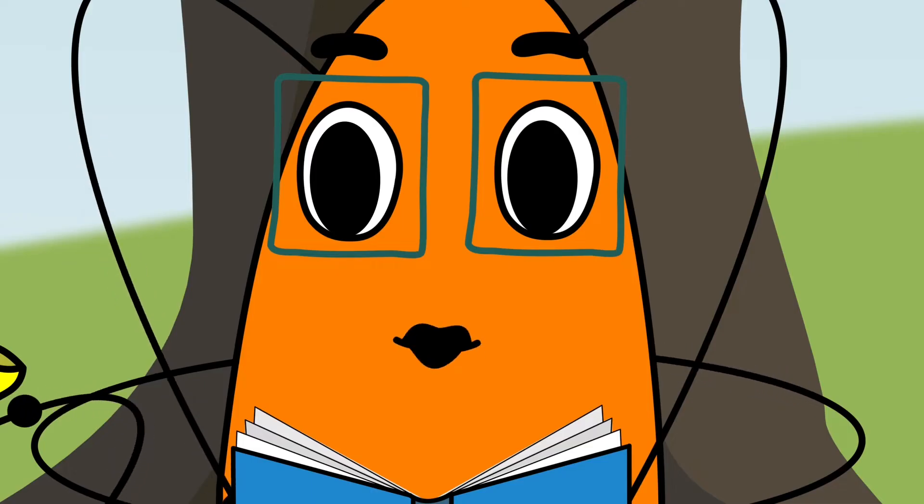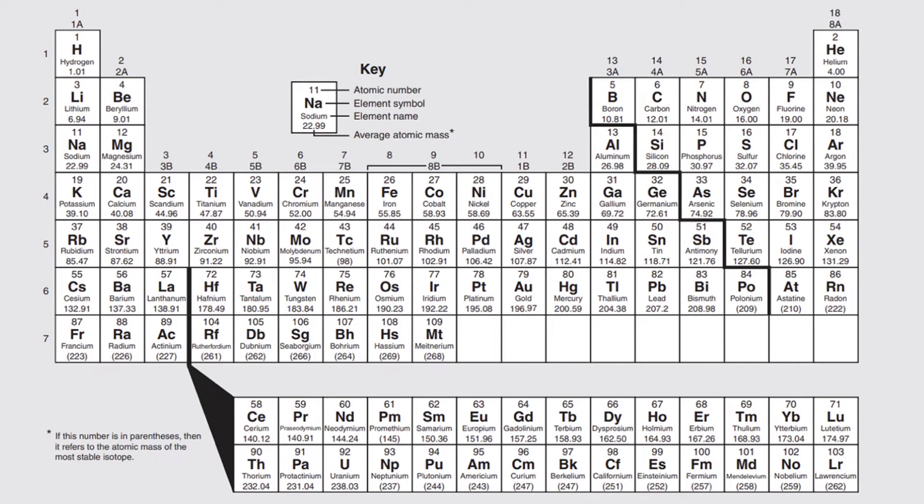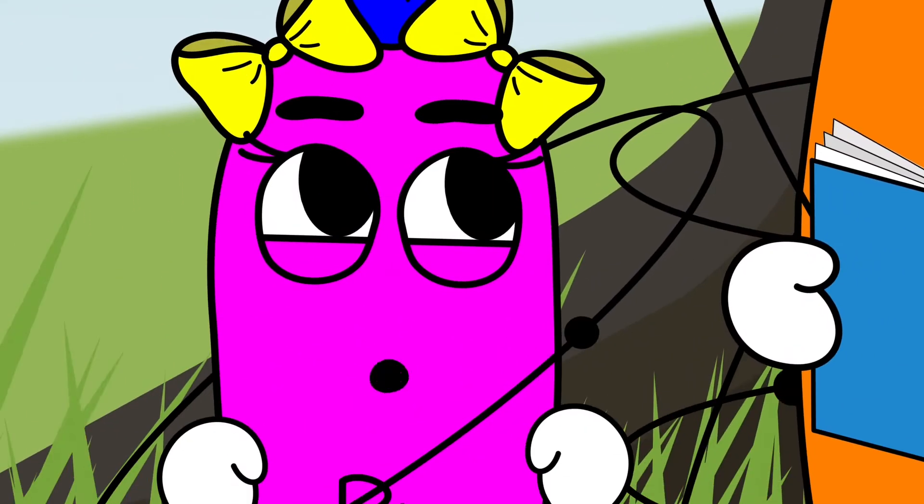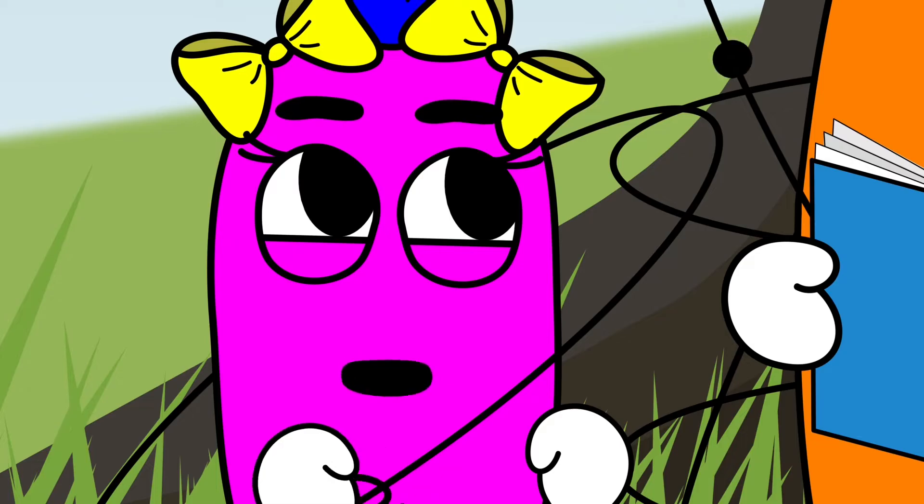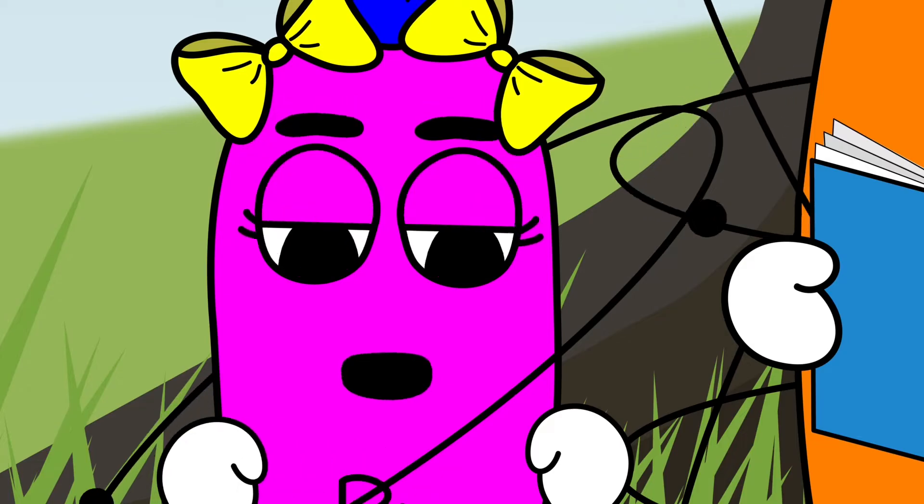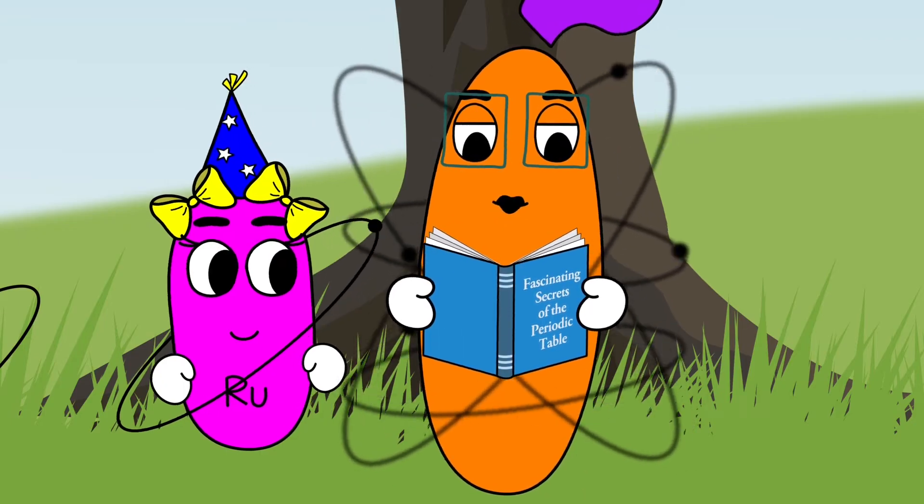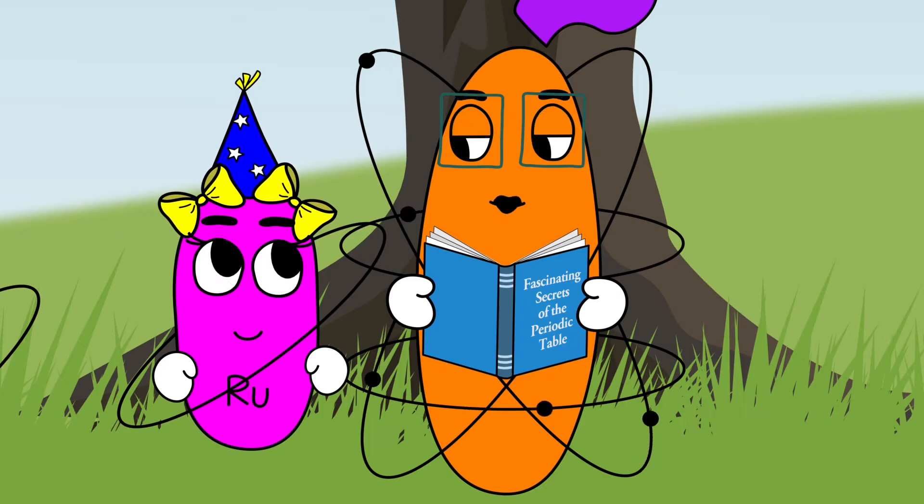No! It's just I'm a group 8A element, which makes me kind of a loner. Yeah, we love you, Xenon, but you've always been a little aloof. I have a full valence shell. 8 electrons. There's no room for more, so I typically don't bond to form compounds or molecules.